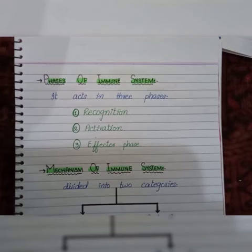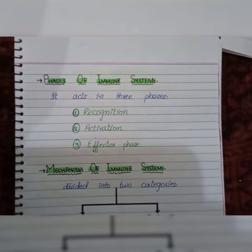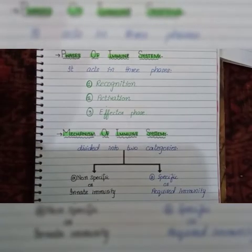In the effector phase, activated cells produce cytokines to activate other cells. Then the cells differentiate — B lymphocytes differentiate into plasma cells to produce antibodies, and also produce surface receptors and some substances. With the help of cytotoxic activity, memory cells are also generated in this phase.